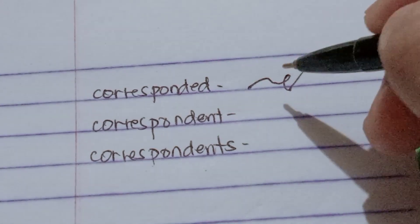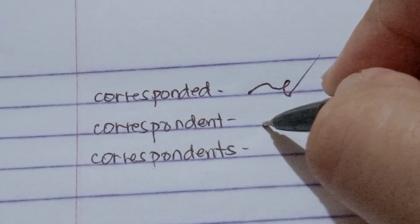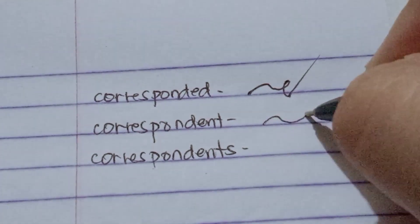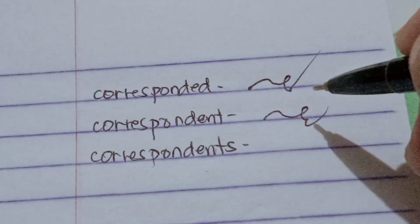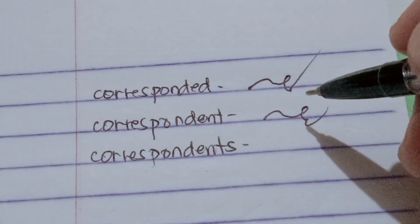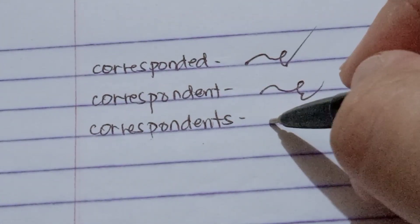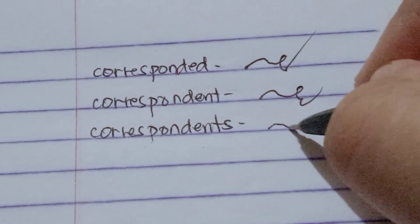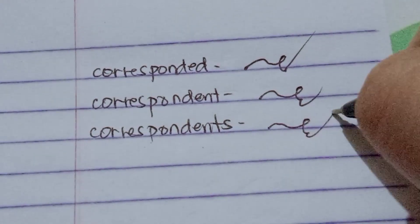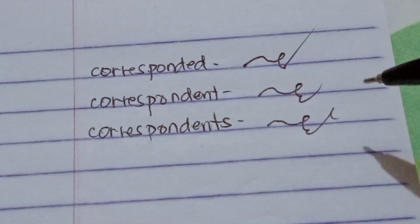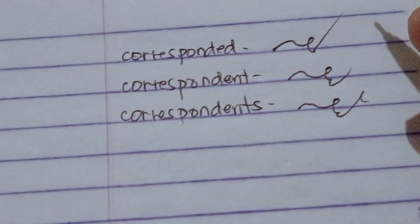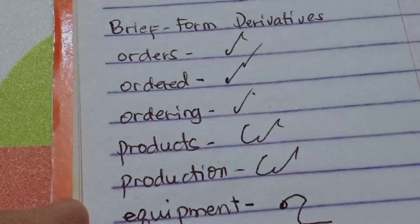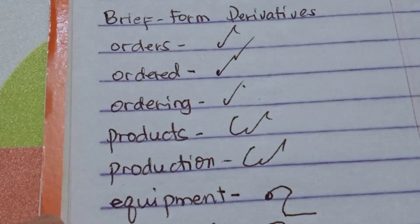Then we have 'correspondent' — K-R-E-S then -ent. And 'correspondents' — K-R-E-S then -ent S. So these are the examples of our brief form derivatives.